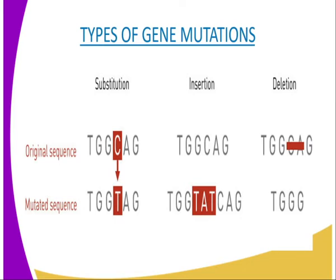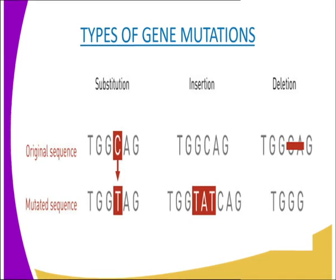Our third type of gene mutation is substitution, whereby a portion of the gene is replaced with a new portion. According to our diagrammatic representation, the original sequence is TGGCAG, but after mutation the gene has become TGG, meaning our C from the original sequence has been substituted or replaced by TAG.